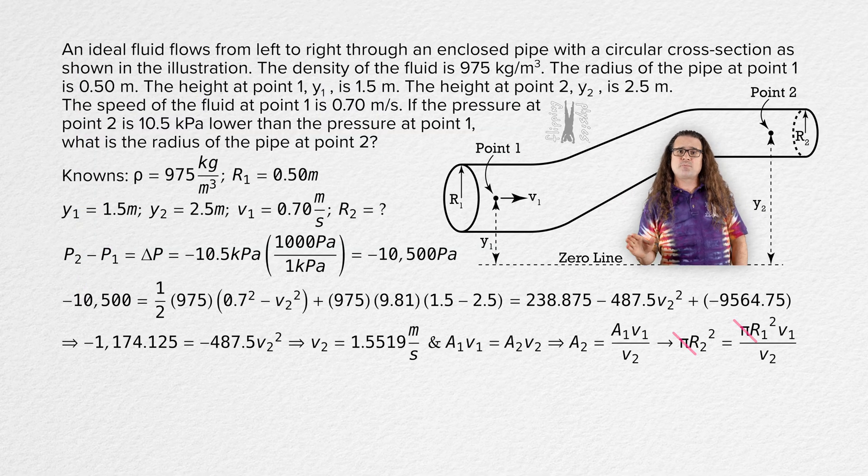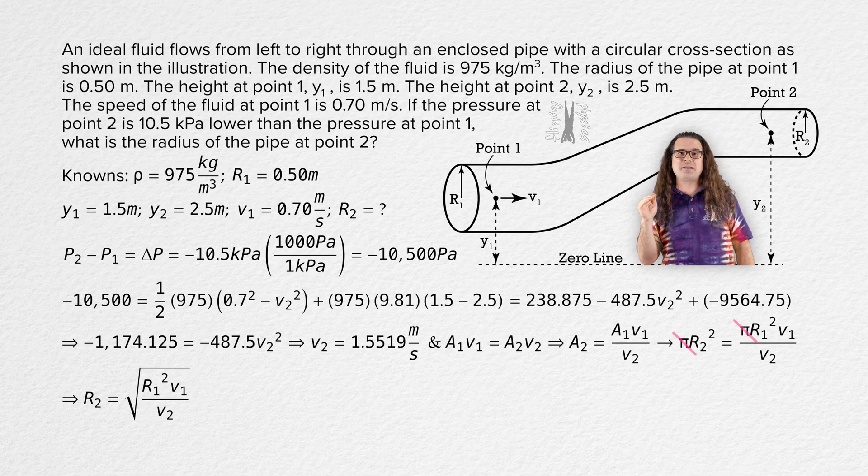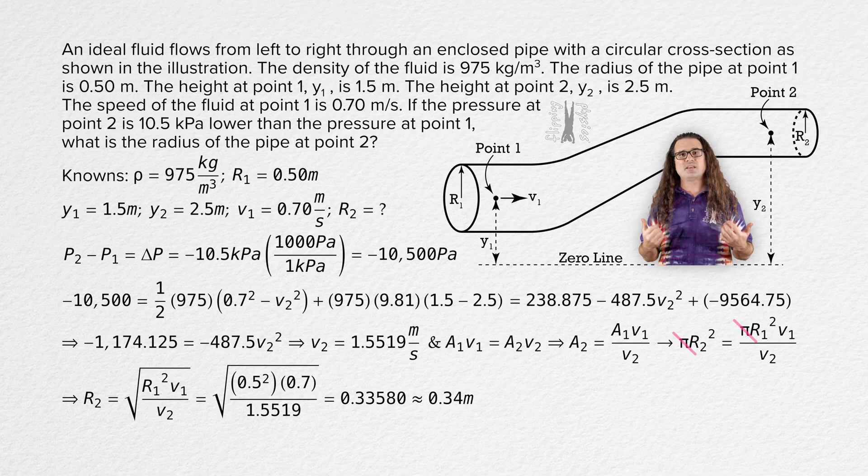And when we take the square root of the equation, we get radius at point 2 equals the square root of the quantity radius at point 1 squared times speed at point 1 divided by the speed at point 2. Substituting in all the numbers and rounding to two sig figs gives us 0.34 meters for the radius of the cross sectional area of the pipe at point 2.